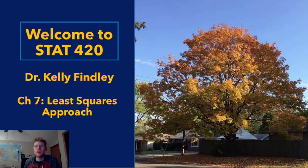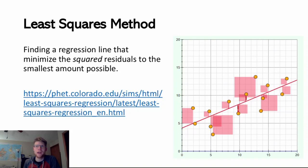The least squares method is one kind of strategy towards finding a line of best fit. The strategy here is to minimize the sum of the squared residuals to the smallest amount possible. A residual is this vertical distance between a particular data point and the line of best fit — it's how much error we have in our prediction if we're using the line to try to predict what y is going to be given a particular x value.